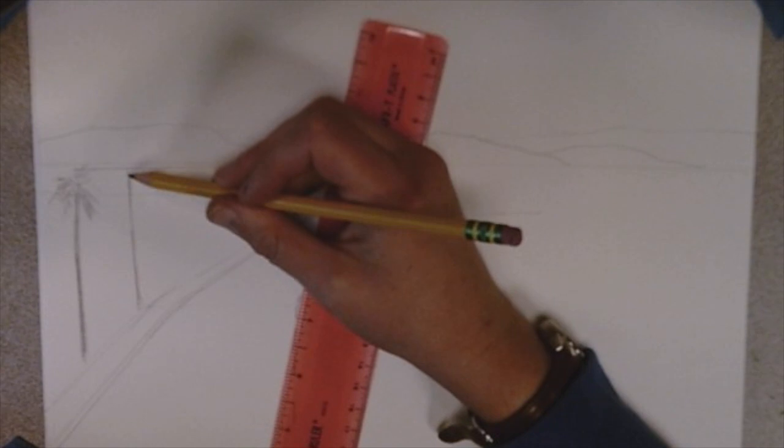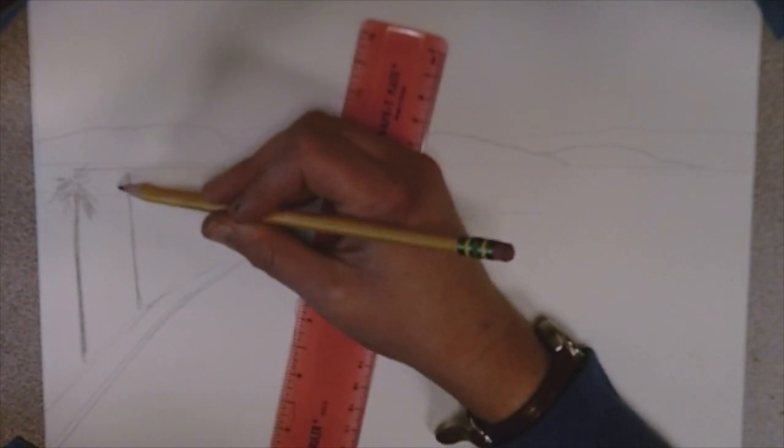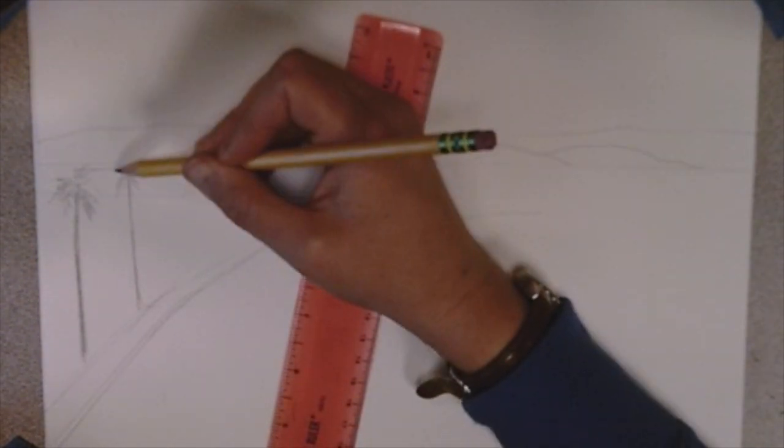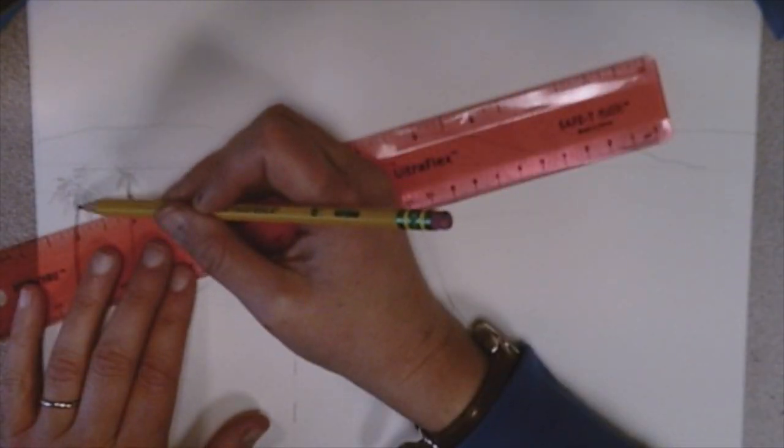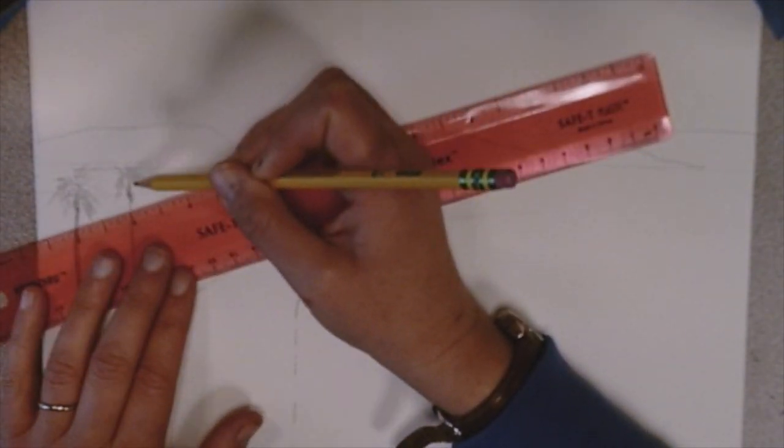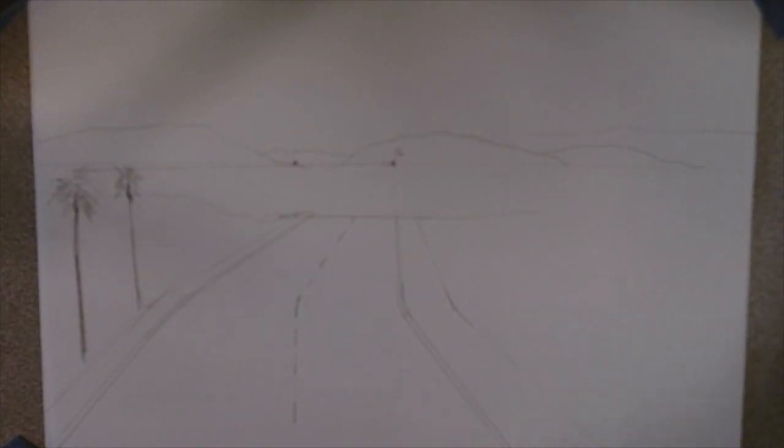I'm grabbing that vanishing point, drawing a line to the top of the tree. And then each tree after this, after that first one, will have to go to the top of that line we just drew. That's how you get the height of each tree.